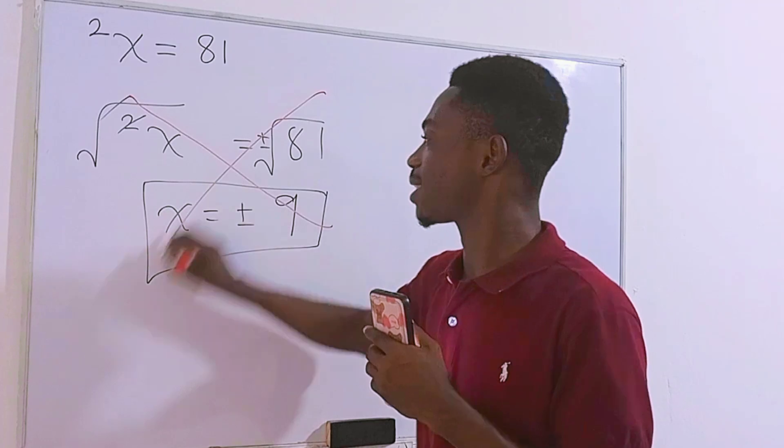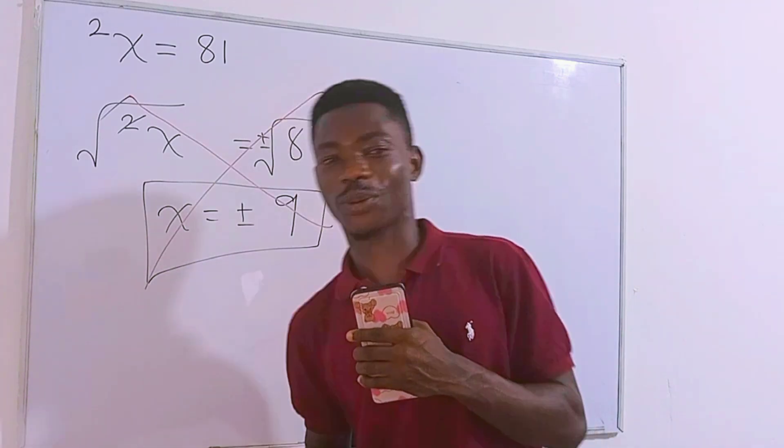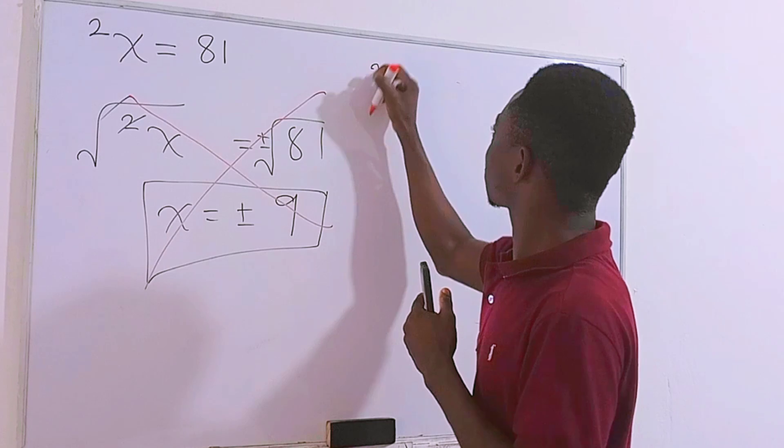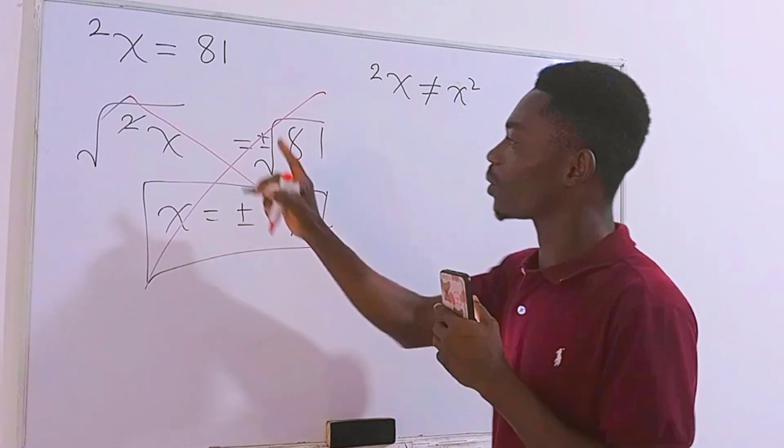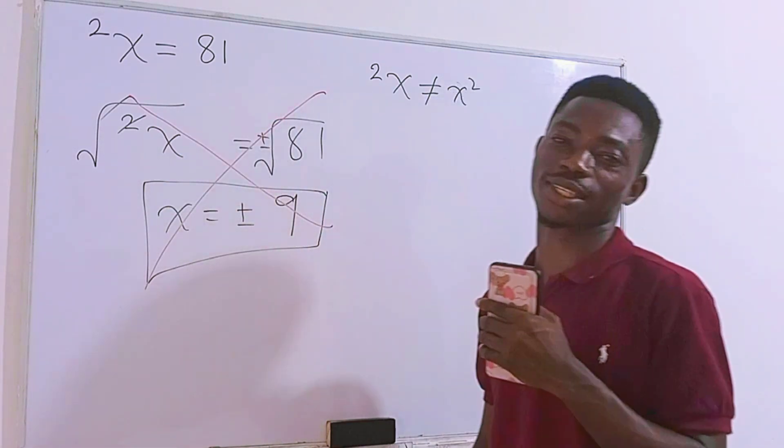No, this is absolutely wrong. Check this. This right here is never equal to x squared. Therefore we cannot take square root on each side of the equation.